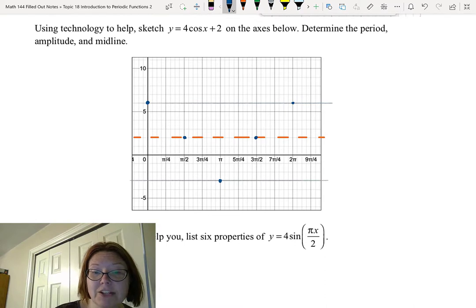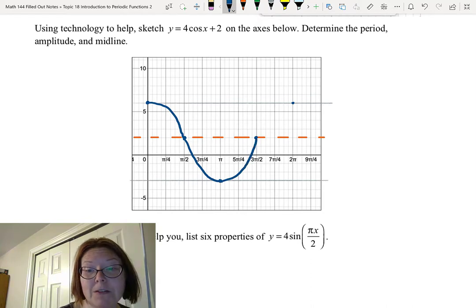And from this I should be able to sketch a graph. I have a nice smooth curve going down through pi over 2 comma 2 to a minimum value of pi comma negative 2.